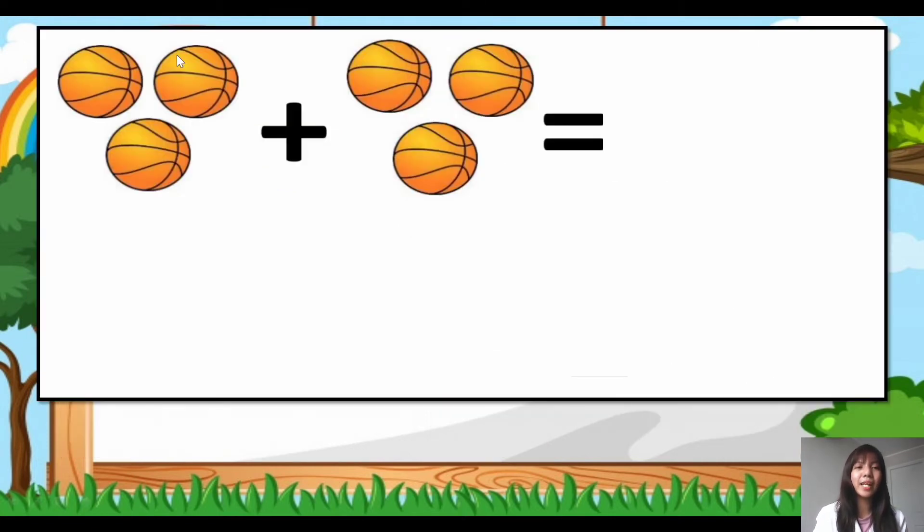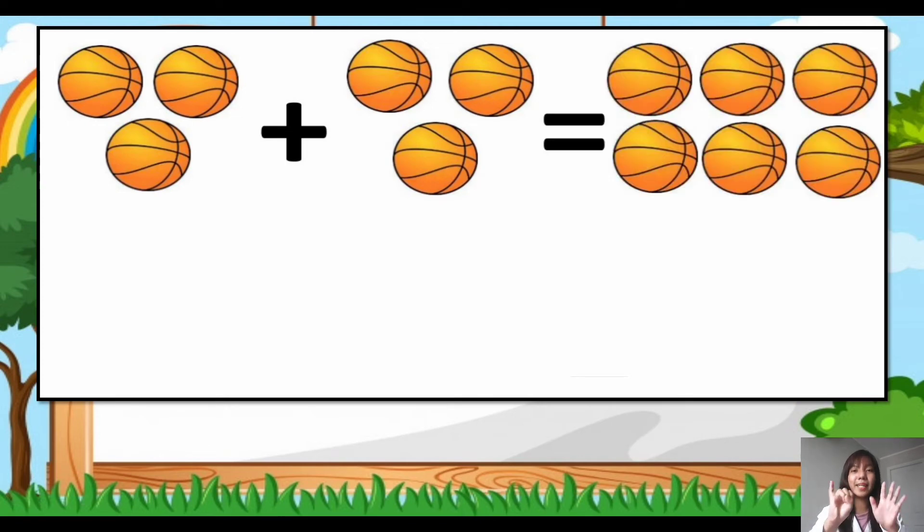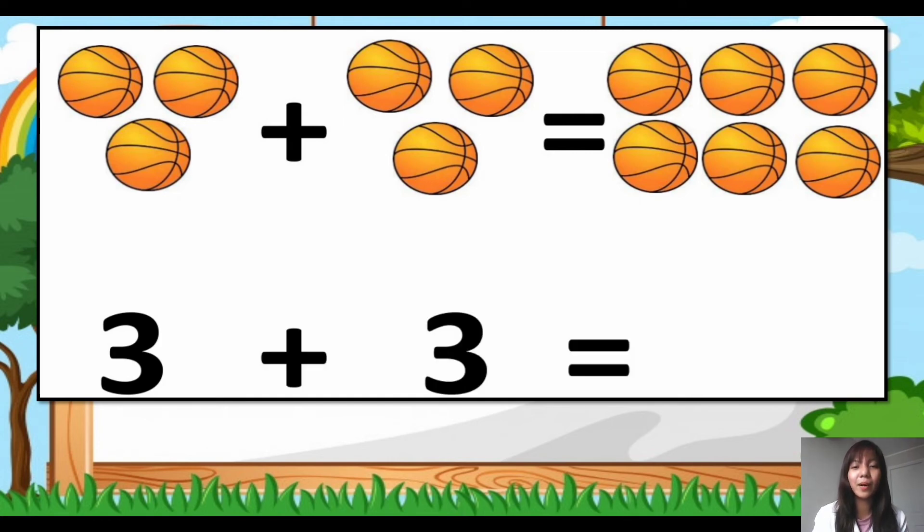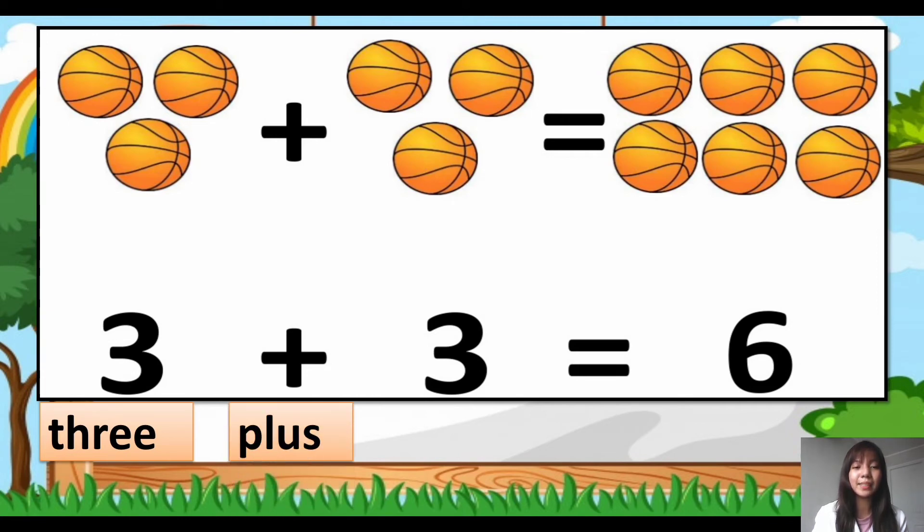Next. Let's count the balls. So how many balls here? 1, 2, 3. Three plus another 3. So how many balls are there in all? We have 6 balls. So the symbol: 3 + 3 = 6. The word: 3, T-H-R-E-E, plus, P-L-U-S, 3 again, same spelling, T-H-R-E-E, then equals, E-Q-U-A-L-S, and then 6, S-I-X. Three plus three equals six.